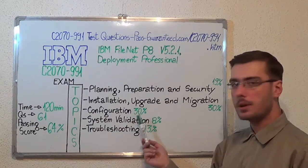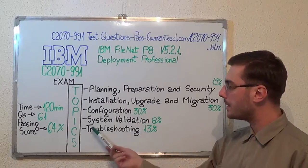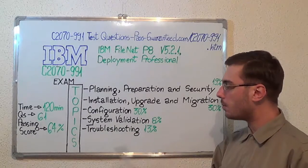After that, Configuration, also with 30%. Then, System Validation, with 8%.